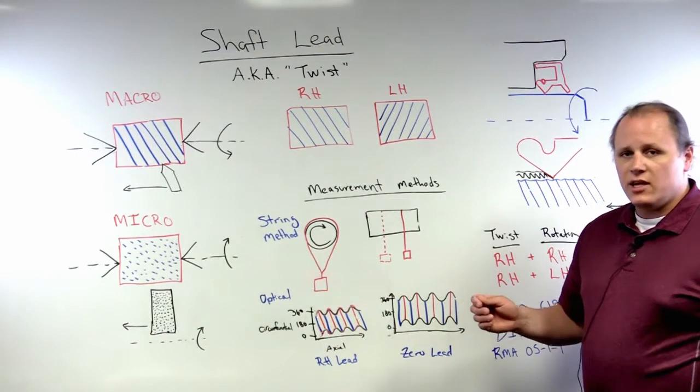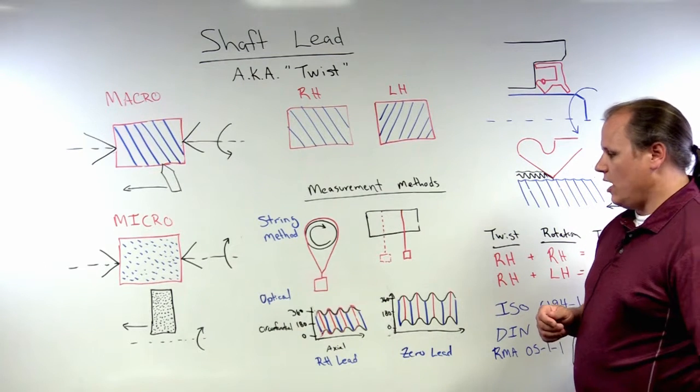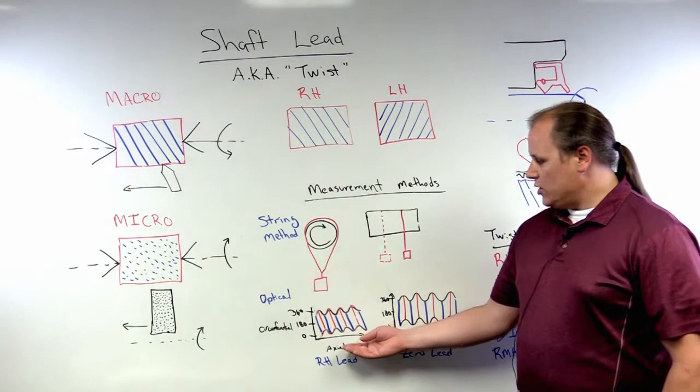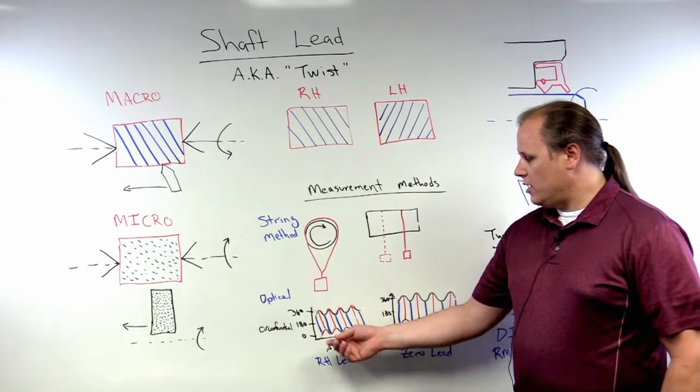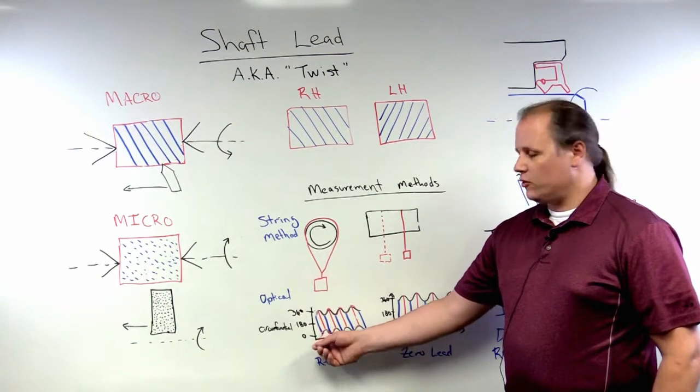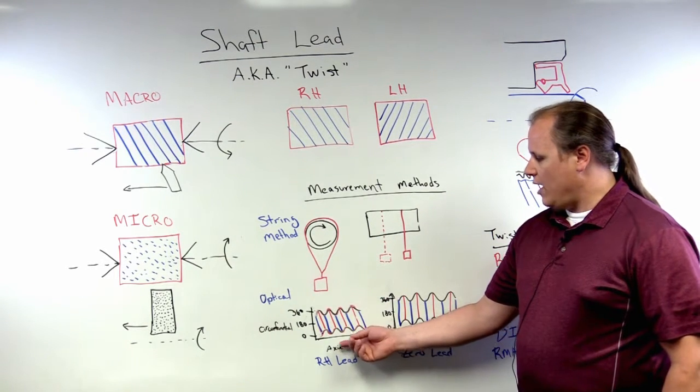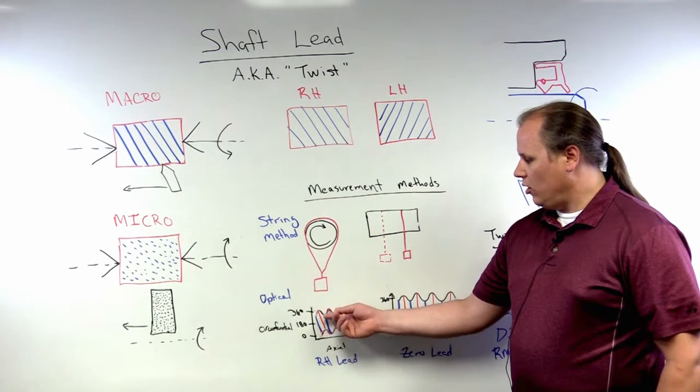Software can then collect the data and process it to produce a representation of the effective shaft lead of the system. The image on the left, you can see as you move in the circumferential direction from 0 to 360 degrees, you actually have axial movement along the shaft.